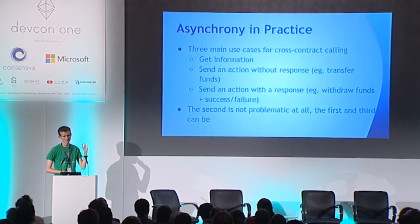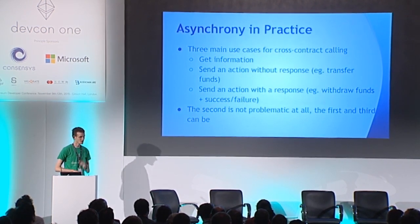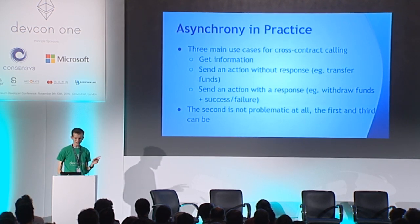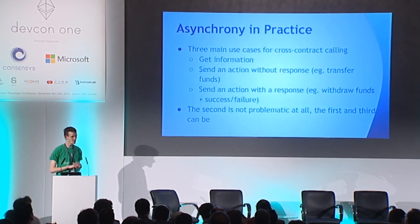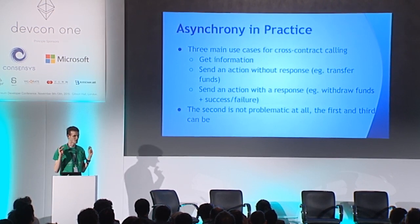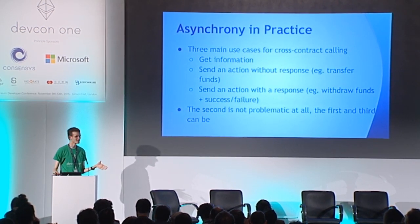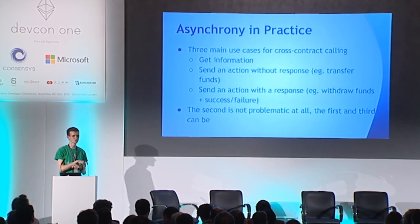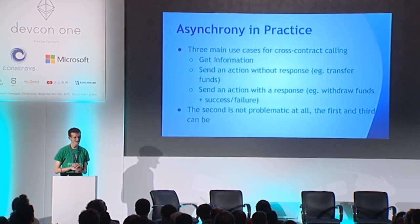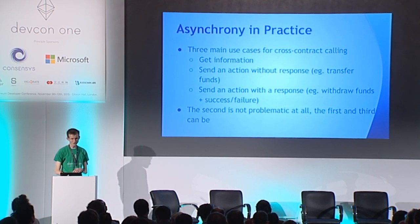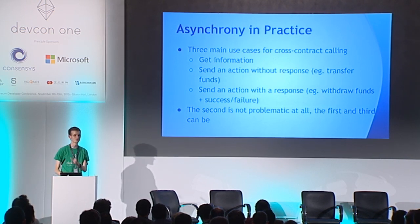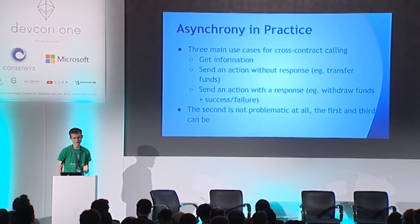In practice there are three main use cases for cross-contract calling. Number one is to get information — calling the Bloomberg contract to find out the USD to Euro exchange rate. The second is to send an action without a response: for example, a crowdfunding application like Wayfund where a campaign fails and you have to refund all the money — a big multi-send that does not require a callback. The third is to send an action with a response, like Gafcoin: you send an action telling Gafcoin to withdraw, Gafcoin does something, and it might return success or failure.